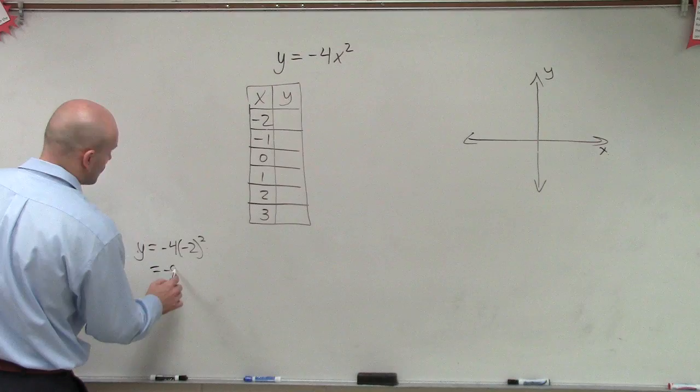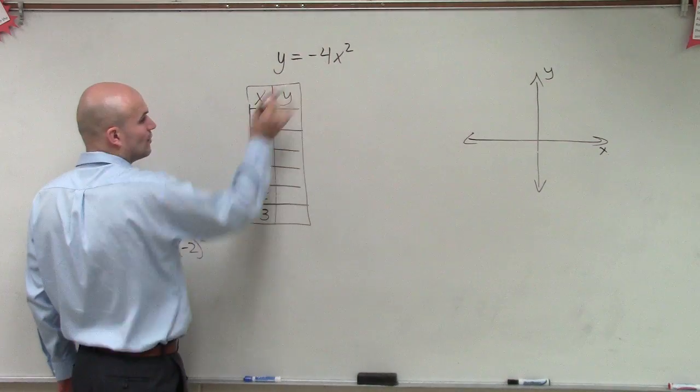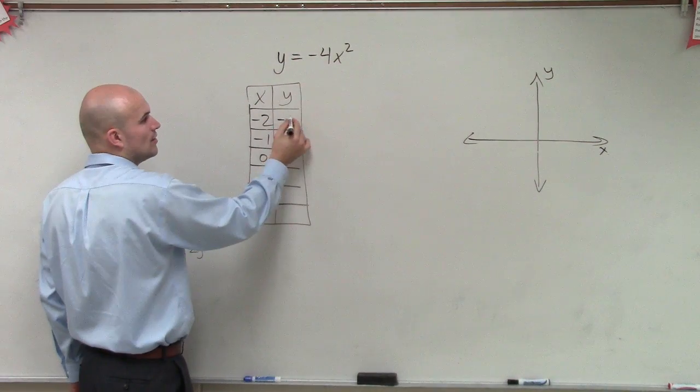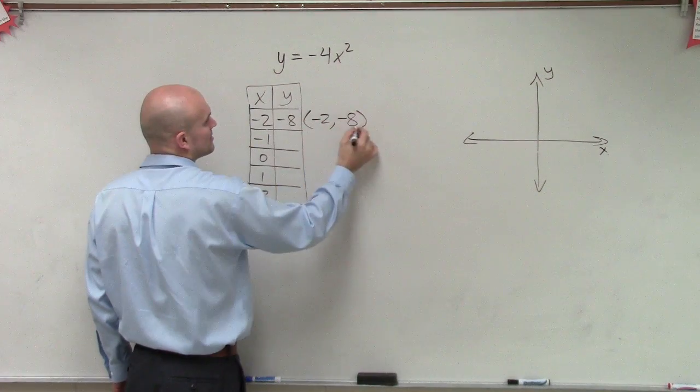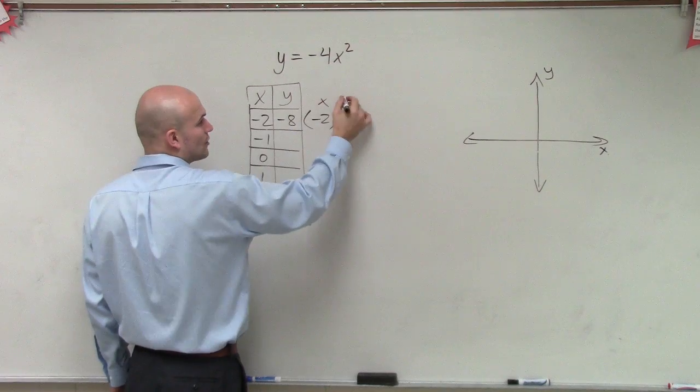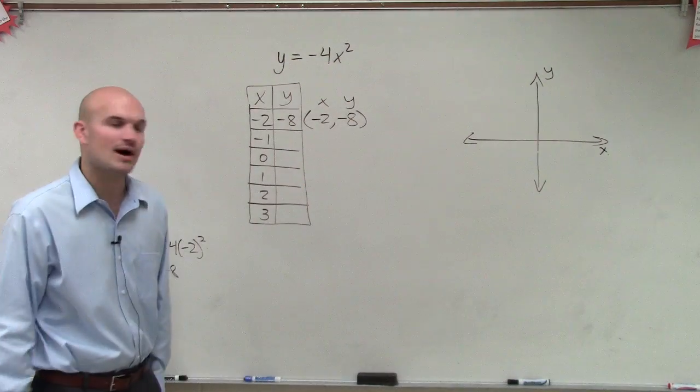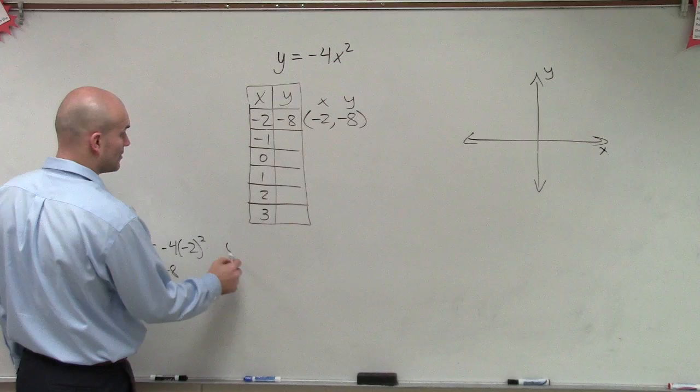So that means when my x-coordinate of this equation, x equals negative 2, the y-coordinate equals negative 16. And that can be rewritten as a coordinate point, where negative 2 represents the x-coordinate, and negative 16 represents the y-coordinate. Then we'll just continue on with our next point.